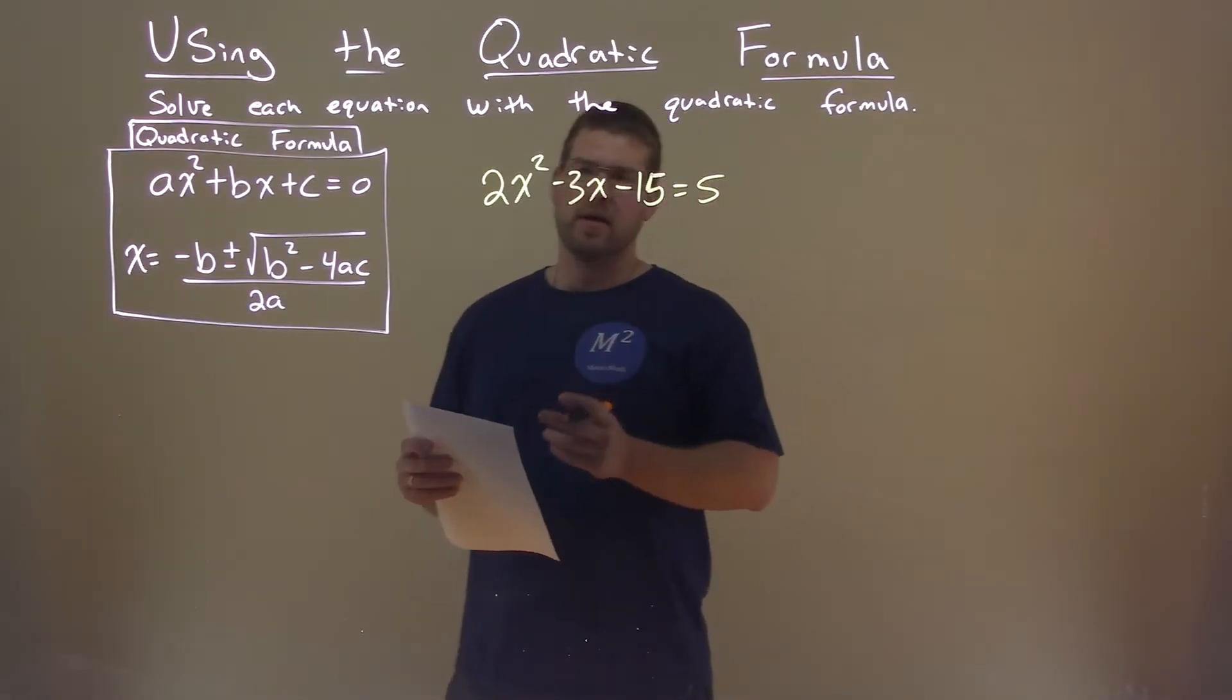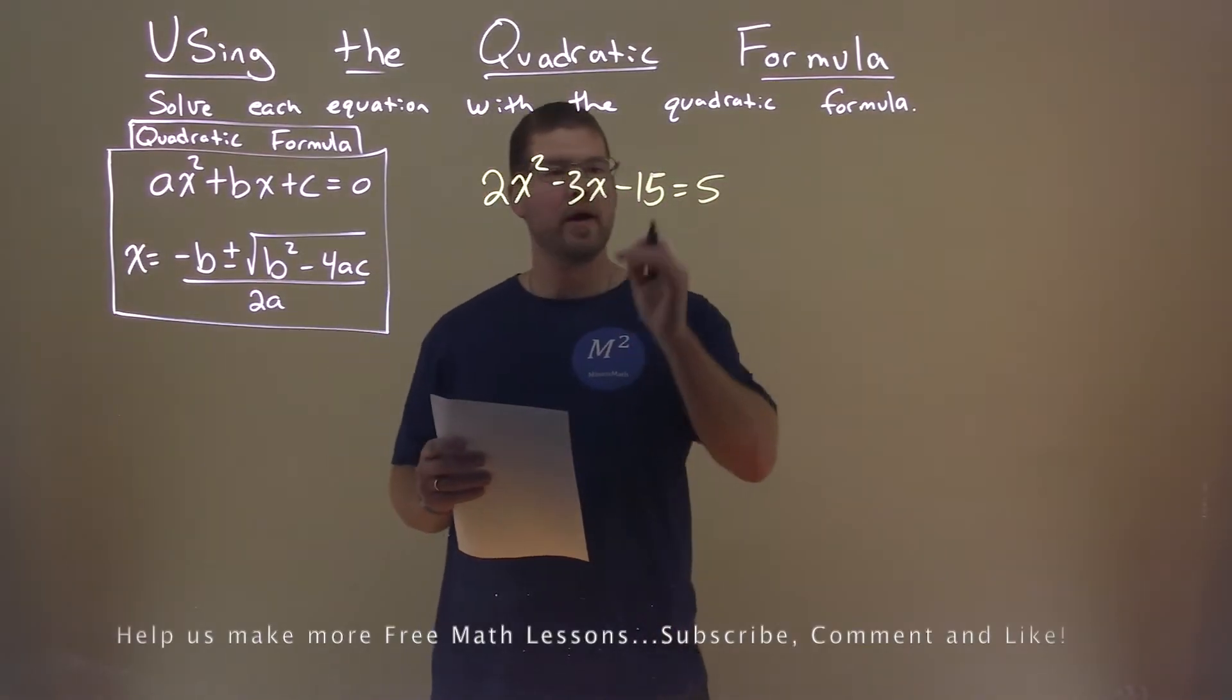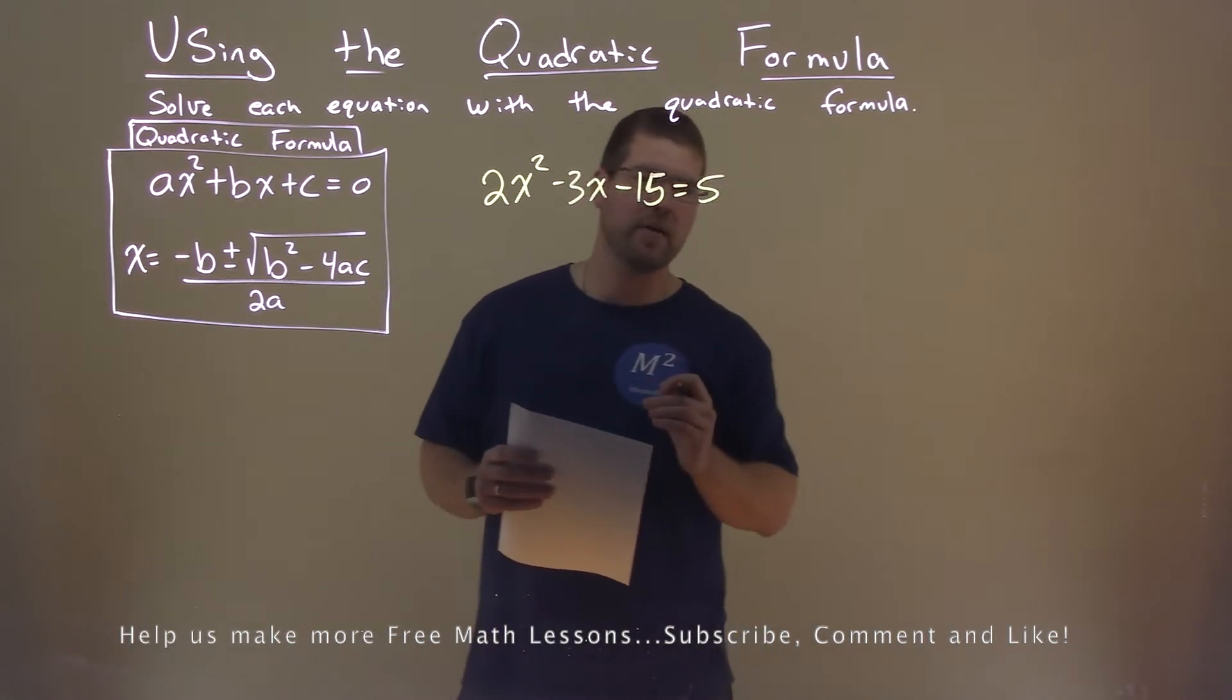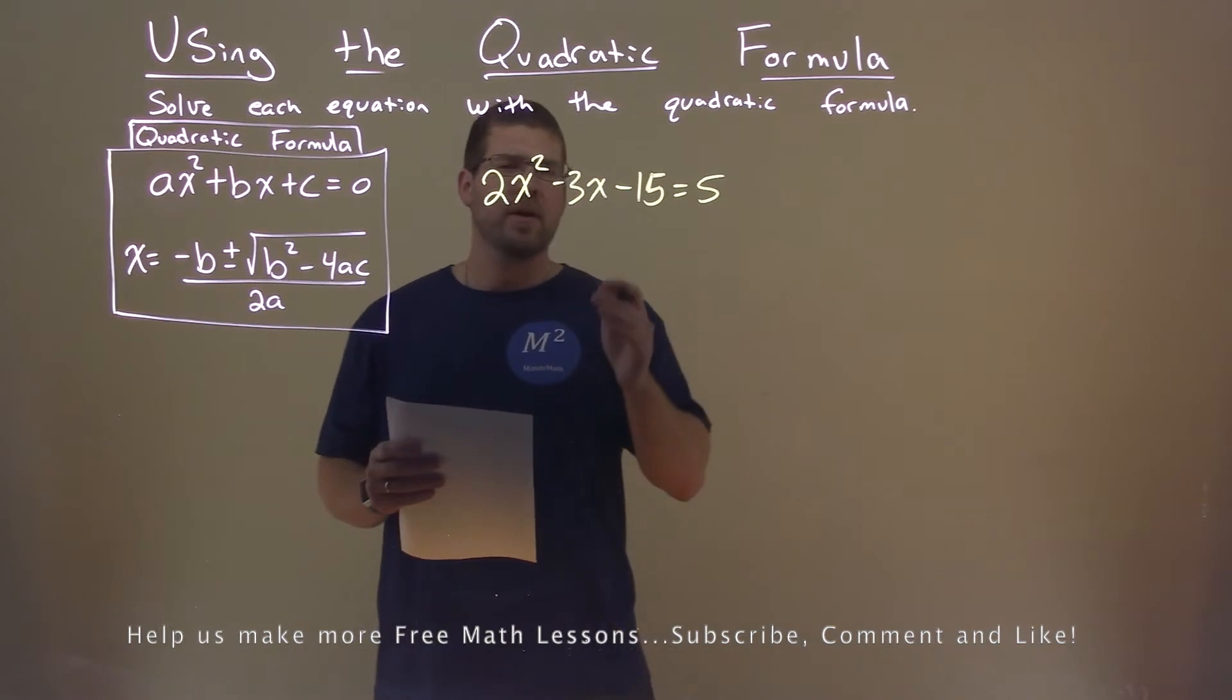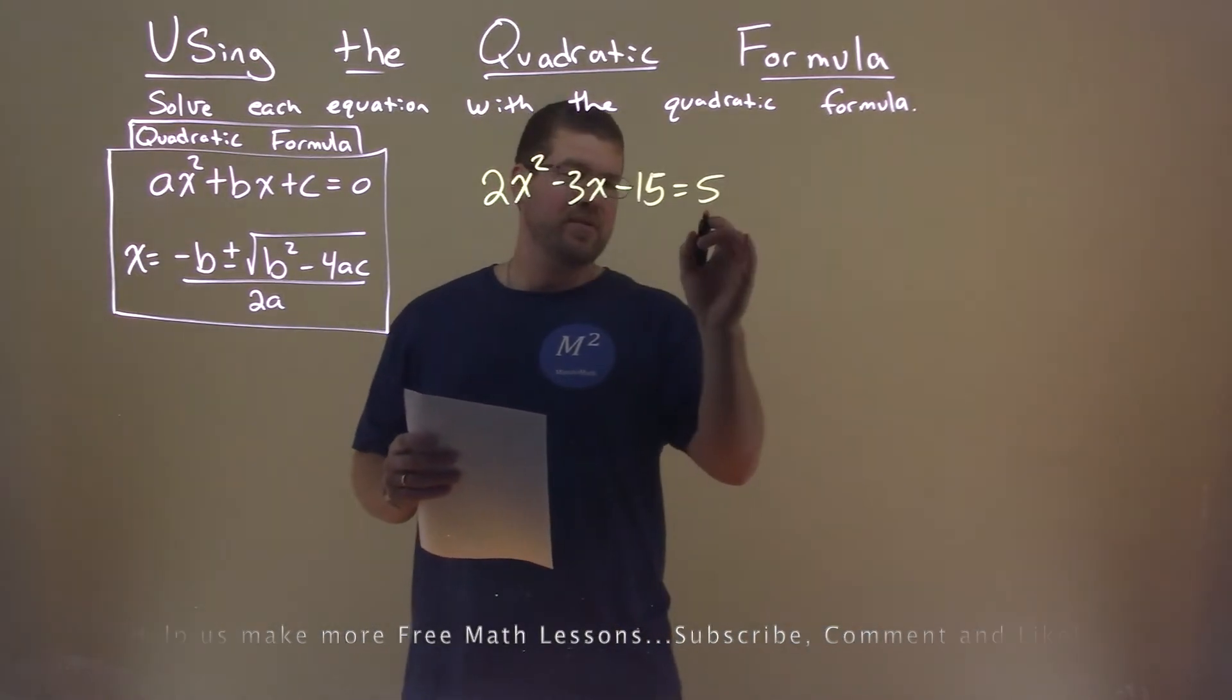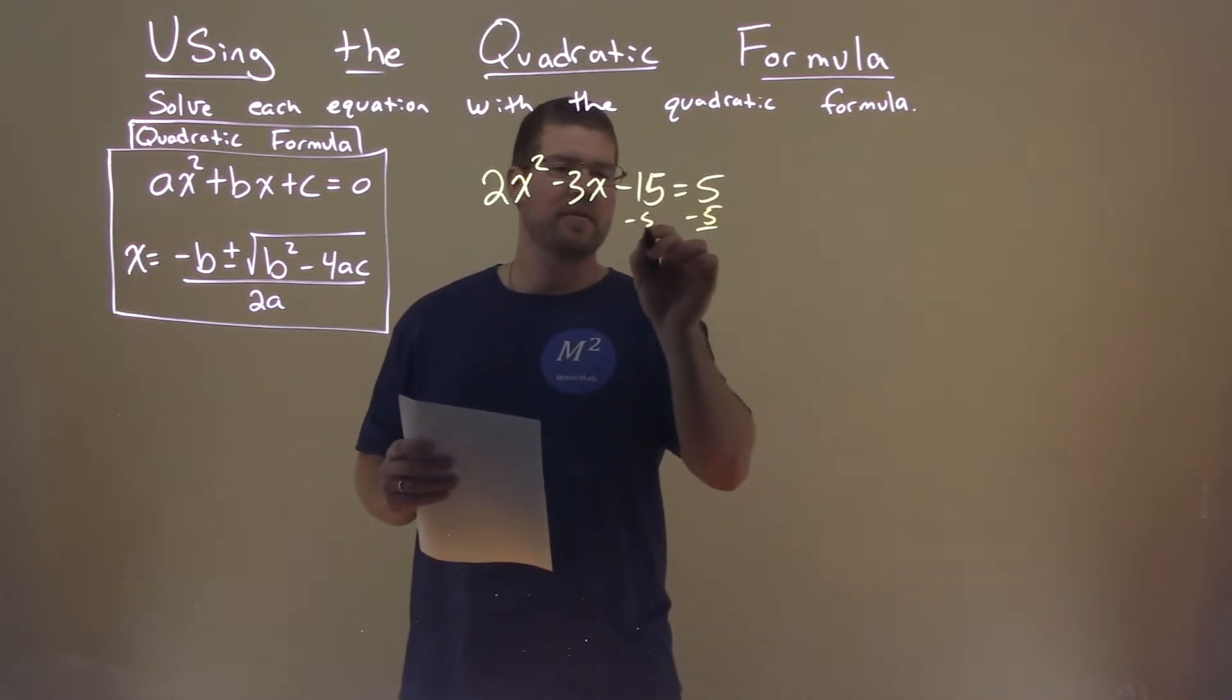We're given this problem right here, 2x squared minus 3x minus 15 equals 5, and we want to solve this using the quadratic formula. First thing I want to get is this whole thing equal to 0, so I'm going to subtract a 5 to both sides.